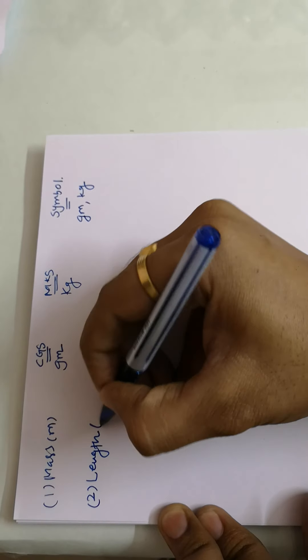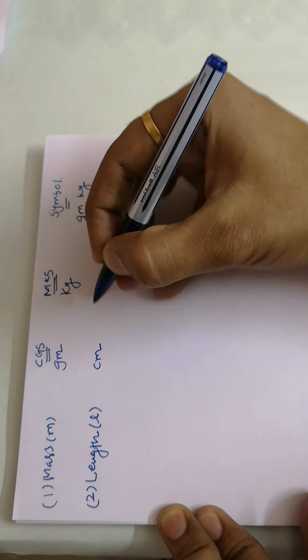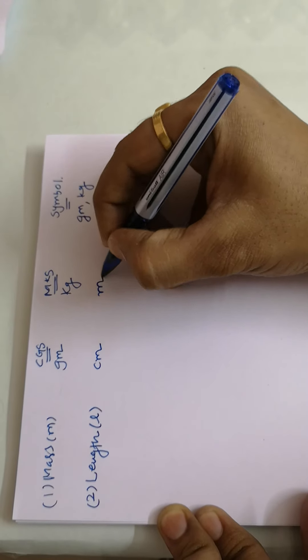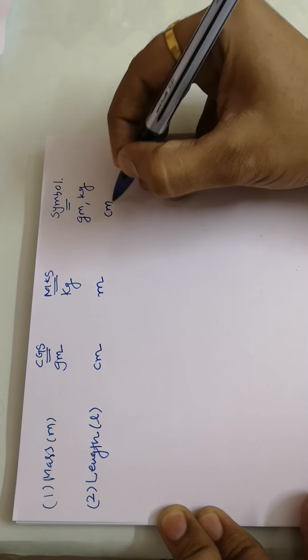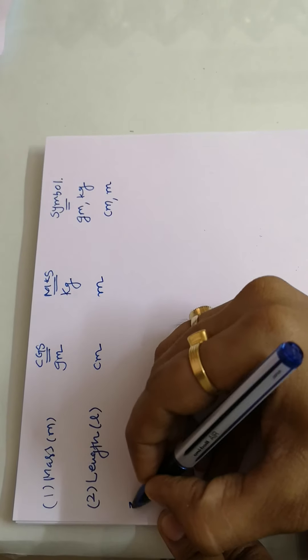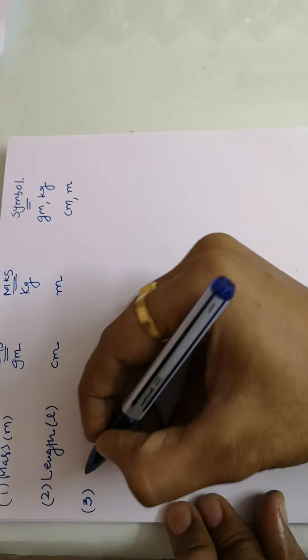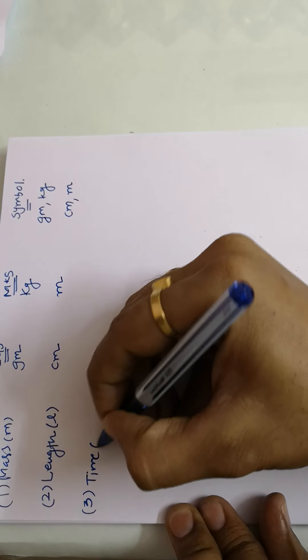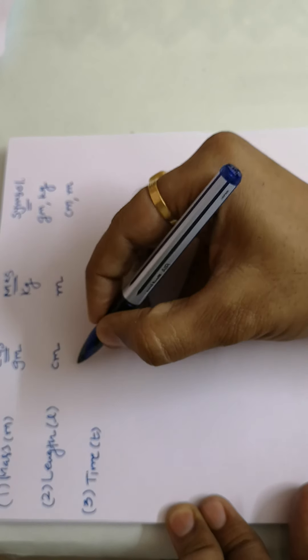The next one is length. We use the symbol 'l'. In CGS it is called centimeter, and in MKS it is called meter. So the symbols are 'cm' and 'm'.